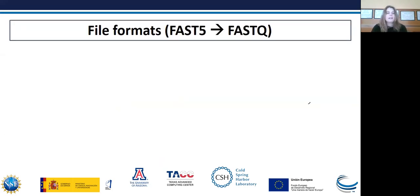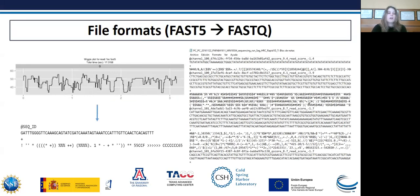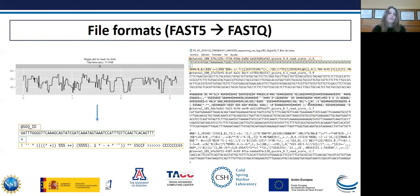Moving on to bioinformatic analysis: this technology generates a Fast5 file format which contains the raw signal of the sequencing. Then this format will be transformed into a more readable file called a FASTQ file. In the first line there is the name of the sequence; the second line contains the DNA sequence; the third line has a plus symbol which represents the end of the DNA sequence; and the fourth line contains the quality assignment to each nucleotide. There is also another format called FASTA, which is similar to the FASTQ file but without the quality information. Either of these two formats can be used in the assembly process, whereas the FASTA file is recommended for greater precision in the reconstruction of the genome.